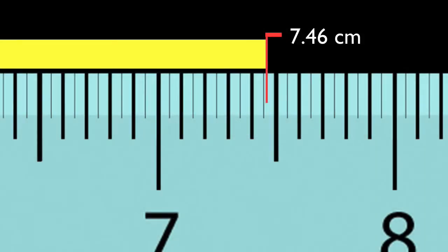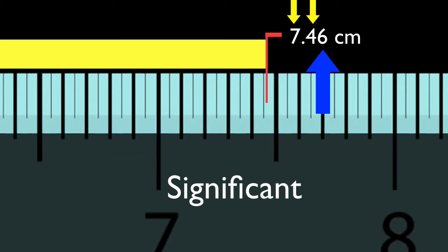Using this special ruler, do you see that all these three digits have real meaning? We're really confident about these first two digits. Now, this third digit is a bit of an estimate, but a reasonable one. All these digits together, we say, are significant.